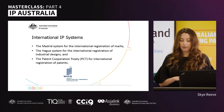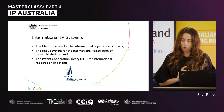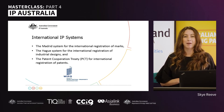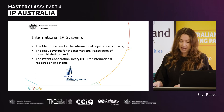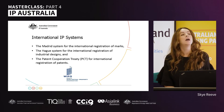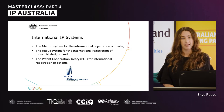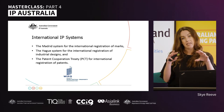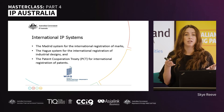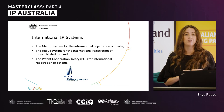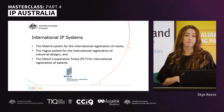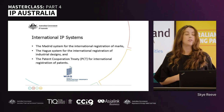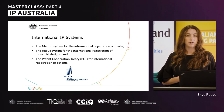The benefits of using these systems include applying with one application, in one language including English, with one set of fees and in one currency — Swiss francs, as WIPO is located in Geneva. It's also useful to have a registration in Australia on which to base your overseas application. With the exception of the Hague system, to which Australia is not currently a member, you'll need a basic or home application in Australia, then file for an international registration and designate which countries you'd like protection in.